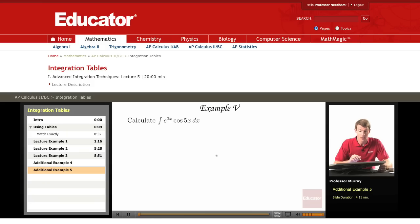Finally, I'd like to mix an exponential function and a trigonometric function, and the integral we have here is e to the 3x times cosine of 5x dx.